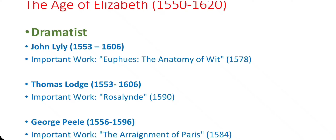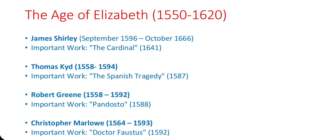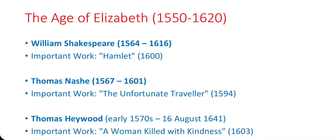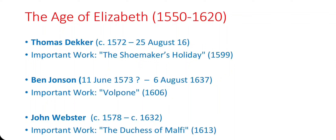Now let's see the dramatists of this age. John Lyly — Euphues: The Anatomy of Wit. Thomas Lodge — Rosalind. George Peele — The Arrangement of Paris. James Shirley — The Cardinal. Thomas Kyd — The Spanish Tragedy. Robert Greene — Pandosto. Christopher Marlowe — Doctor Faustus. William Shakespeare — Hamlet. Thomas Nashe — The Unfortunate Traveler. Thomas Heywood — A Woman Killed with Kindness.